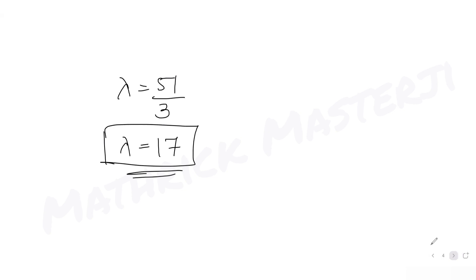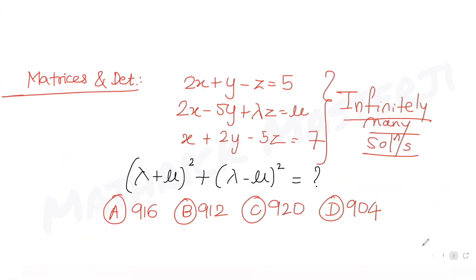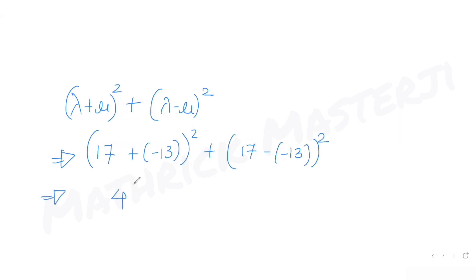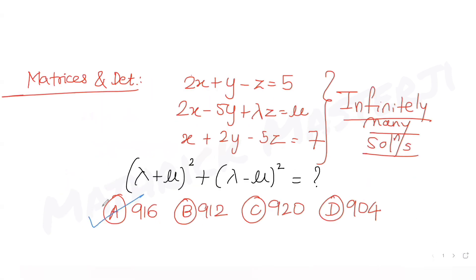Now substituting into the expression (λ + μ)² + (λ - μ)²: with λ = 17 and μ = -13, we get (17 + (-13))² + (17 - (-13))² = (4)² + (30)² = 16 + 900 = 916. So the answer for the expression is 916, which matches option A.